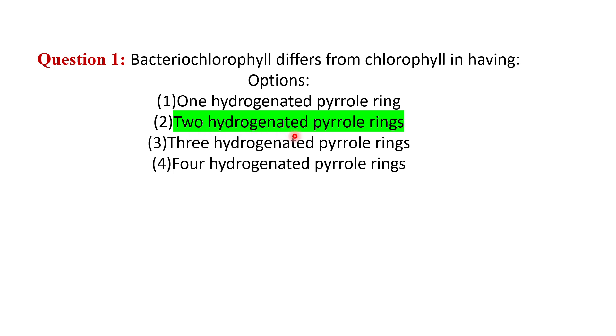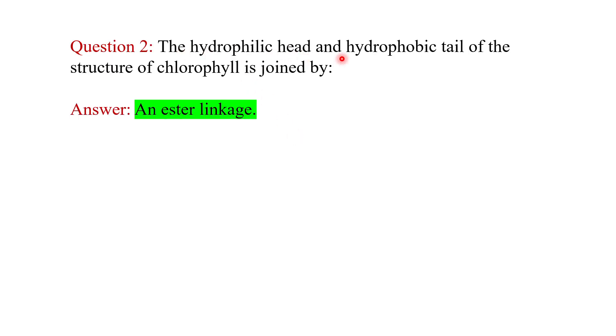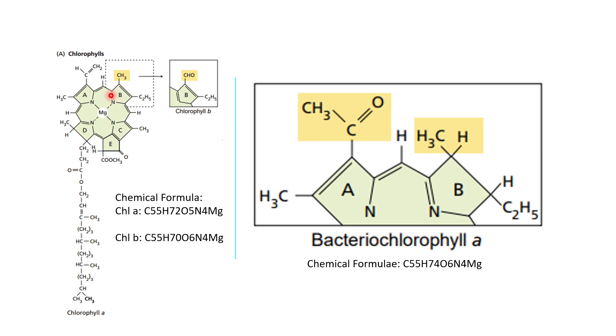The second question is: the hydrophilic head and hydrophobic tail on the structure of chlorophyll is joined by what? Here we see in the structure how the hydrophilic head and hydrophobic tail are joined by one ester linkage. So the answer will be an ester linkage.